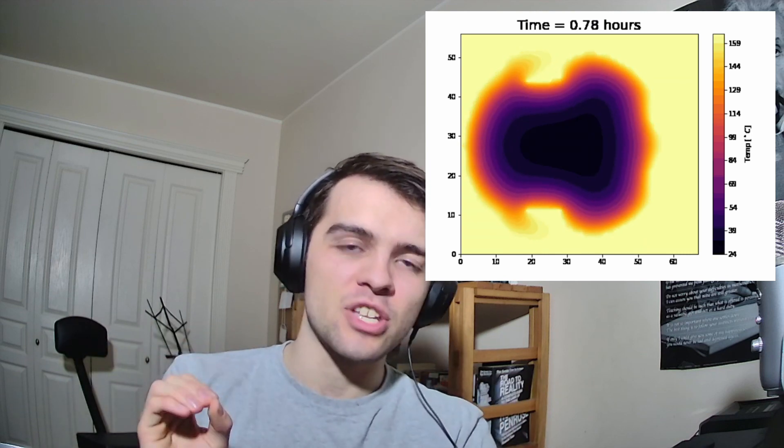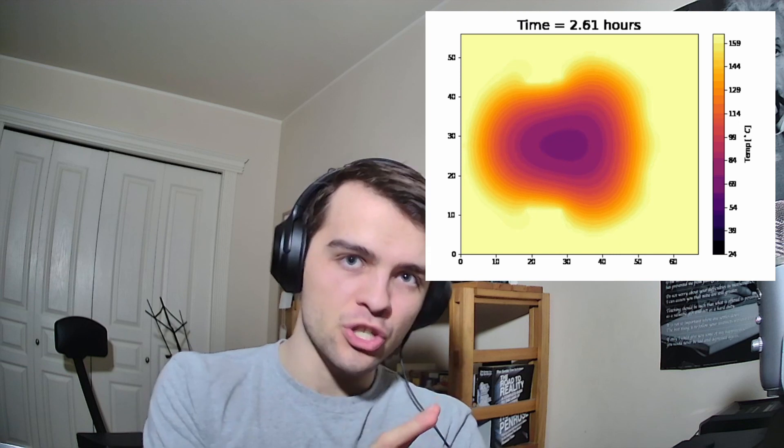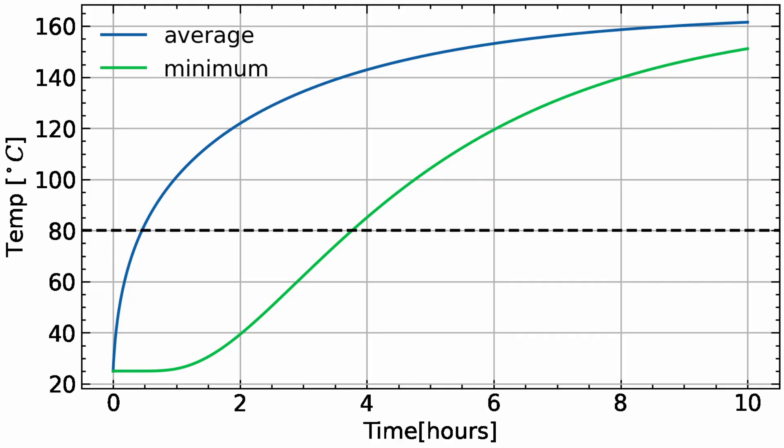Perhaps most interesting is the comparison of the average temperature of the turkey to the minimum, or coldest, temperature of the turkey. You can see that while the average temperature heats up pretty fast, that minimum temperature takes a lot longer to heat up. And of course when you're actually cooking something like a turkey, you want to make sure all the meat is cooked well, so you're probably most interested in the minimum temperature of the turkey.